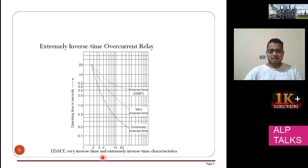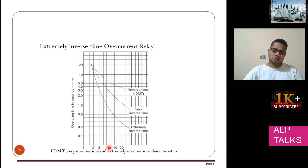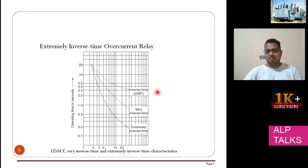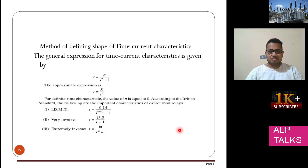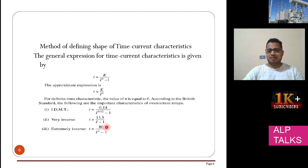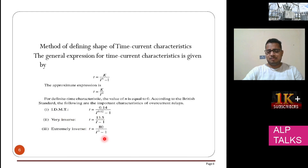This is a similar graph. For operating times between 1 and 10 seconds, you can see different timings. On the y-axis is operating time and on the x-axis is the multiple of current. You have inverse time (IDMT), very inverse time, and extremely inverse time — these are three different relay characteristics shown on the graph. As per British standards, if the exponent is 0.02, it is IDMT; if it is 1, it is very inverse; if it is 2, it is extremely inverse. The numerator in the formula varies slightly based on the application.